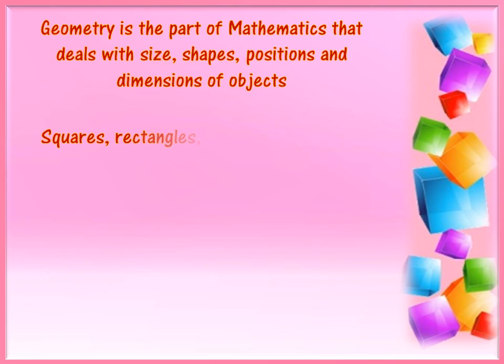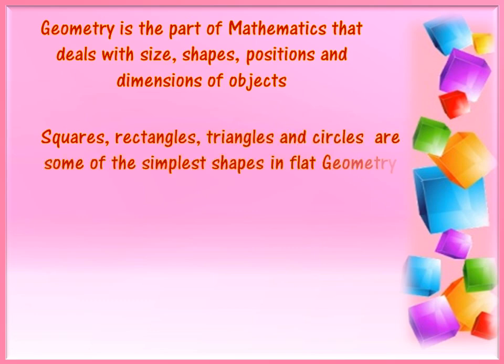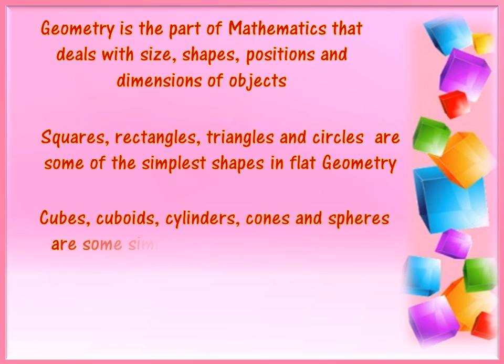Squares, rectangles, triangles and circles are some of the simplest shapes in flat geometry. Cubes, cuboids, cylinders, cones and spheres are some simple shapes in solid geometry.